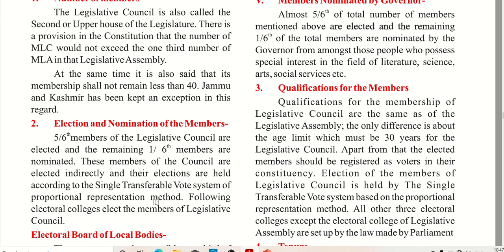Five-sixths of the LC members are elected and the remaining one-sixth are nominated. These members of the council are elected indirectly, and their elections are held according to the single transferable vote system of proportional representation method. The following electoral colleges elect the members of the LC.